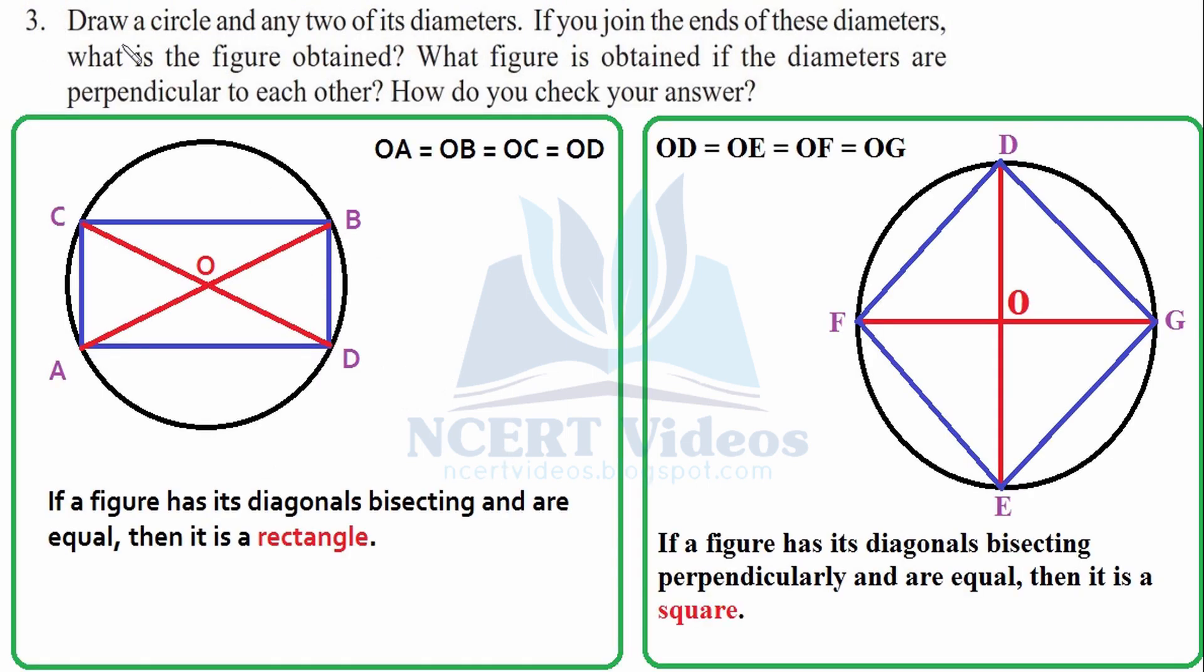Third, draw a circle and any two of its diameters. We have made a circle and we have made another circle as well. Now, we have constructed two diagonals. Diagonal is the longest chord. It passes through the center. We mark the center O.